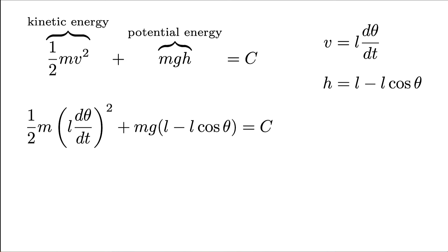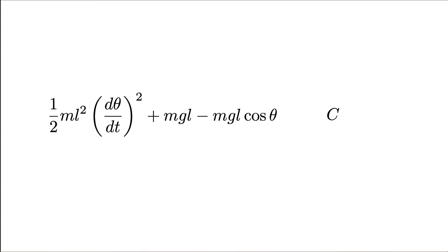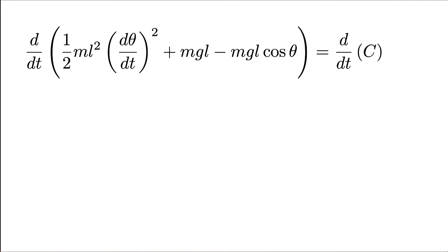I'll start by substituting for v and h. Then I'll do some algebra: take L outside where it's being squared, and multiply mg into the parentheses L - L cos(θ). Then, similar to what I did with arc length, I'll take the derivative of both sides with respect to t.